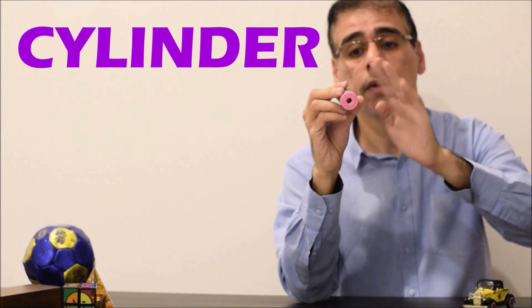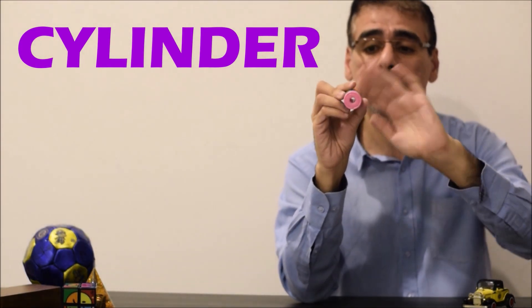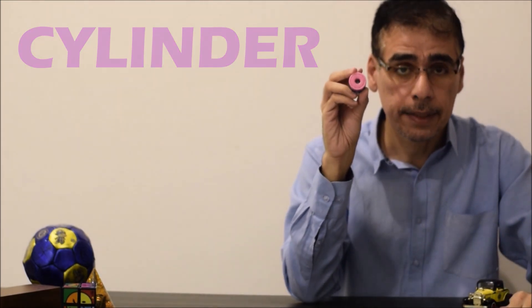It has two flat faces. This one is a carrot. We will focus only on the flat faces, and they look like a circle.